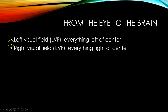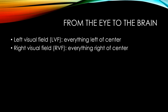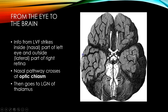So a few terms: the left visual field — if you're looking straight ahead, your eyes are looking straight ahead — your left visual field is everything to the left of the center of your vision. And the right visual field, if you're looking again straight ahead, is everything to the right of the center.